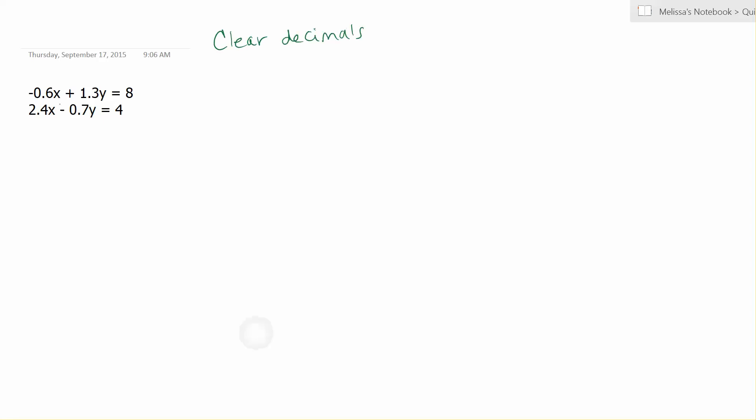If you look at the coefficients in the top equation, 0.6 and 1.3, 0.6 is really 6 tenths, and 1.3 is 1 and 3 tenths. When we clear decimals, it's the same idea as clearing fractions. You locate the least common denominator, which is the denominator that all the others will divide into. For this example, it would be 10.